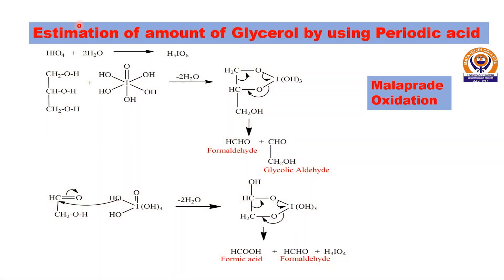Today we are going to estimate the amount of glycerol by using periodic acid. Periodic acid is hygroscopic in nature, so it will absorb two water molecules. This reagent will then react with the molecule of glycerol and undergo carbon-carbon bond cleavage with the removal of two water molecules, and we will obtain this complex. This complex then undergoes carbon-carbon bond cleavage to give one mole of formaldehyde and glycolic aldehyde.